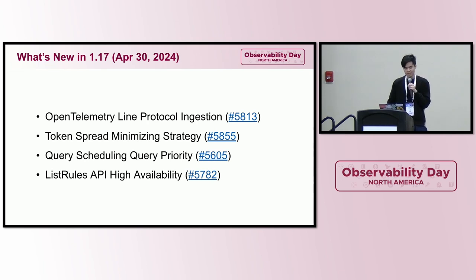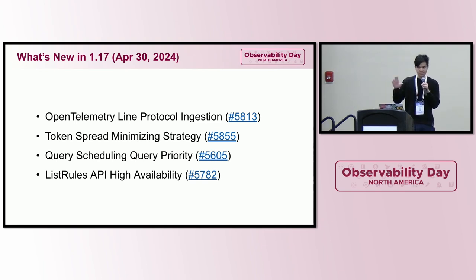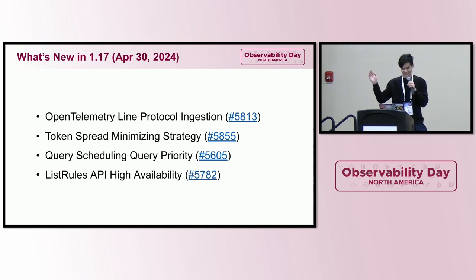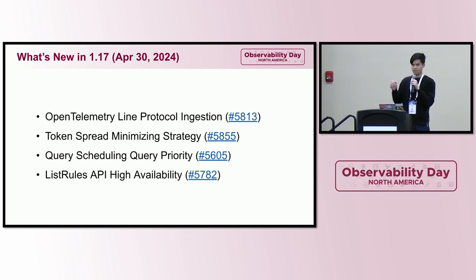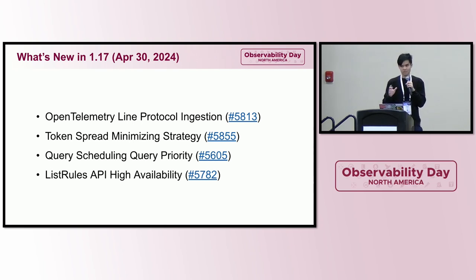What's new in 1.17: we started supporting OTLP ingestion natively, so you can send OTLP directly to Cortex and it'll start ingesting your metrics. There's also a new strategy for token spread around the ingestors. There's query scheduling as well — you can tell Cortex to prioritize one query over others, so you don't have a backlog of queries not being served in a timely manner. There's also a list rules API high availability — if one of the rulers goes offline, it won't cause an error.